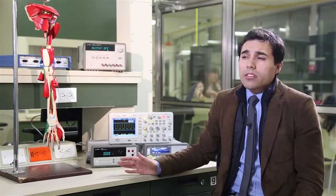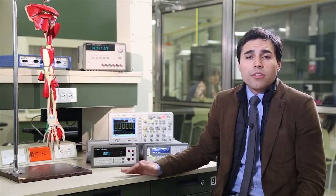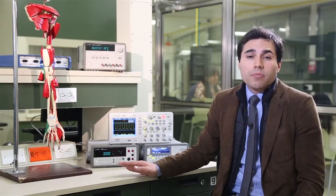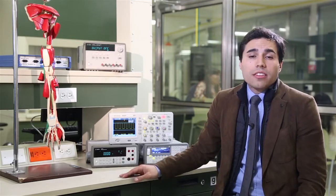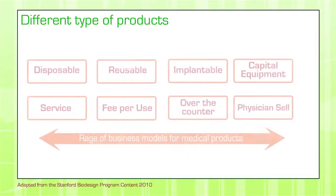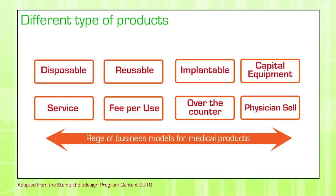When thinking about different types of products, you are also talking about different types of business models. There are traditionally eight different types of business models that you can utilize for every type of medical device product. These include a disposable business model, a reusable business model, an implantable business model, a capital equipment business model, and additionally: services, fee-per-use, over-the-counter models, and direct physician sales.